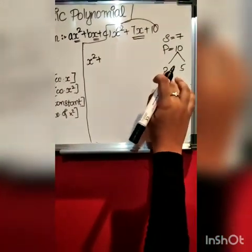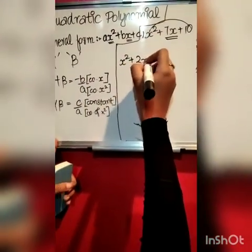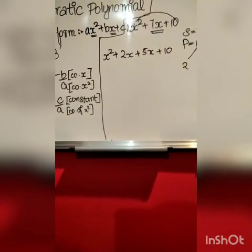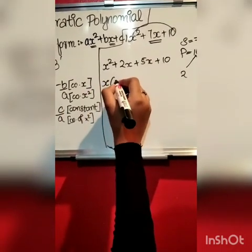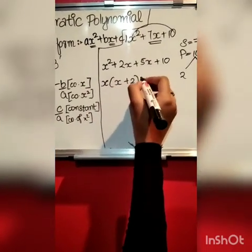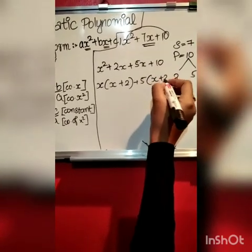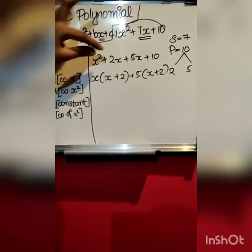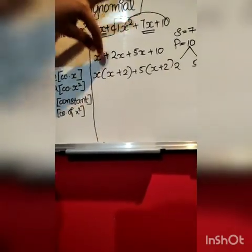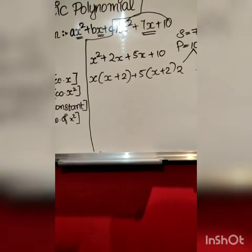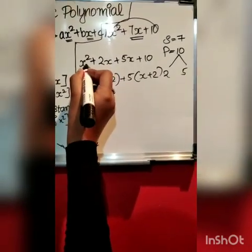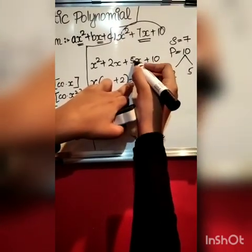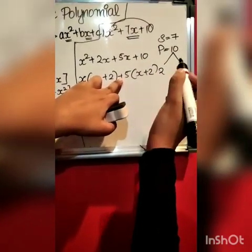So we split 7x into 2x and 5x: x² plus 2x plus 5x plus 10. Now factorizing by grouping: x times x plus 2, and 5 times x plus 2. Expanding: x into x is x², x into 2 is 2x, plus 5 into x is 5x, and 5 into 2 is 10.